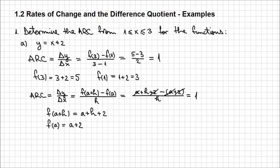One thing to notice about this linear function x plus 2 — its graph represents nothing else than a line. The average rate of change is going to always be equal to 1, regardless of what interval we consider. And the instantaneous rate of change is going to be the same always, because it's basically a line.